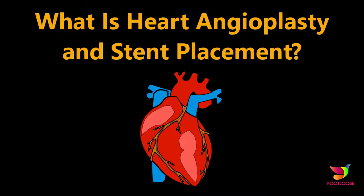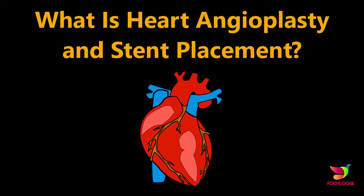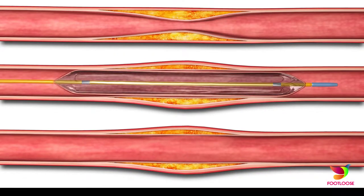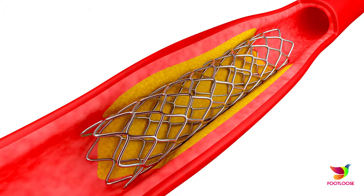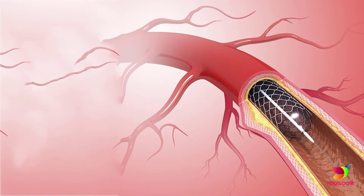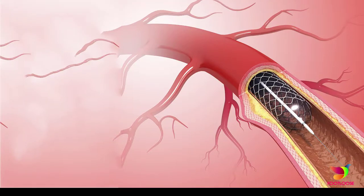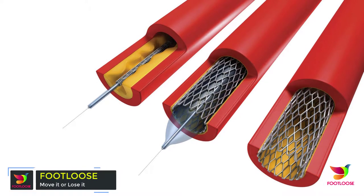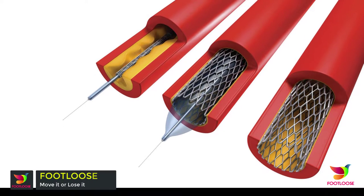What is heart angioplasty and stent placement? Angioplasty and stent placement are common procedures to open arteries in the heart that are clogged. These procedures are formally known as coronary angioplasty or percutaneous coronary intervention. Angioplasty involves the use of a tiny balloon to widen the artery. A stent is a tiny mesh tube that your doctor inserts into the artery to prevent it from closing. A surgeon typically performs both procedures at the same time.